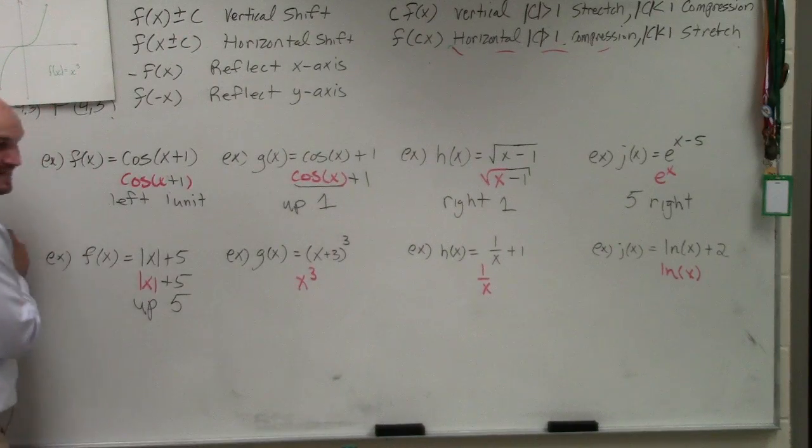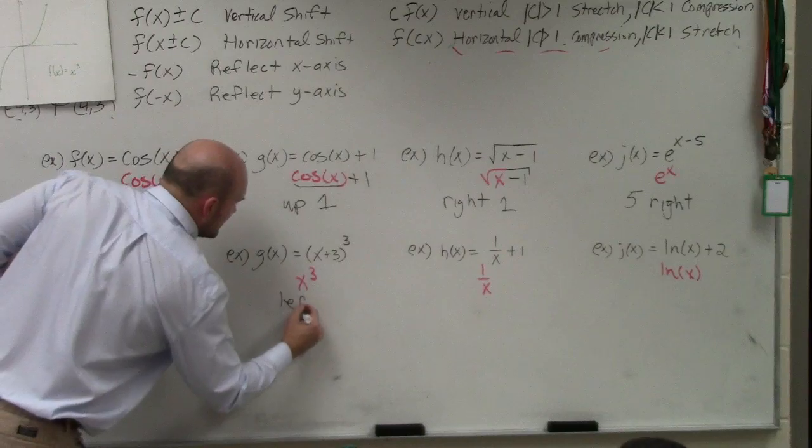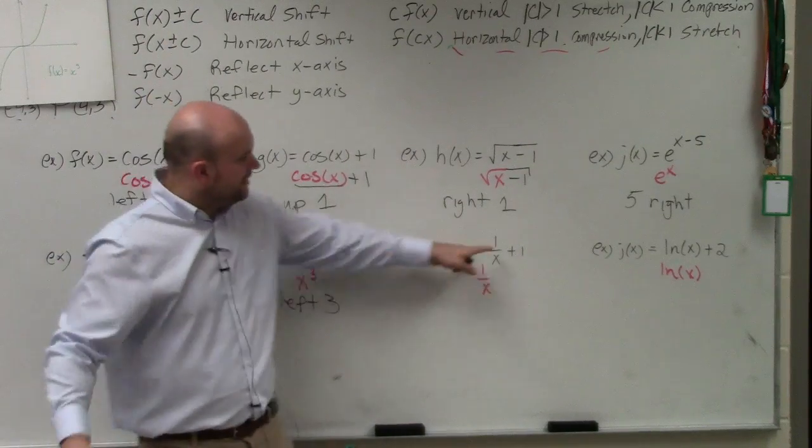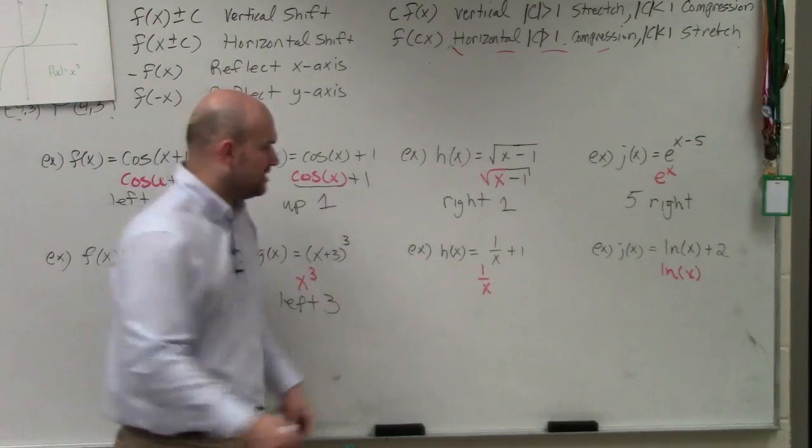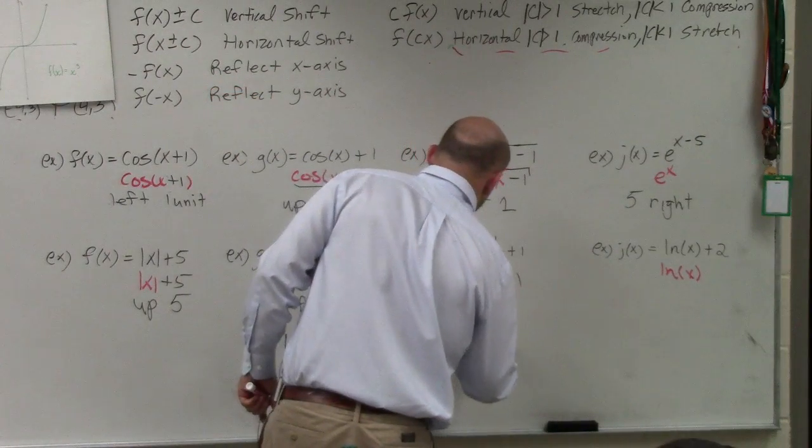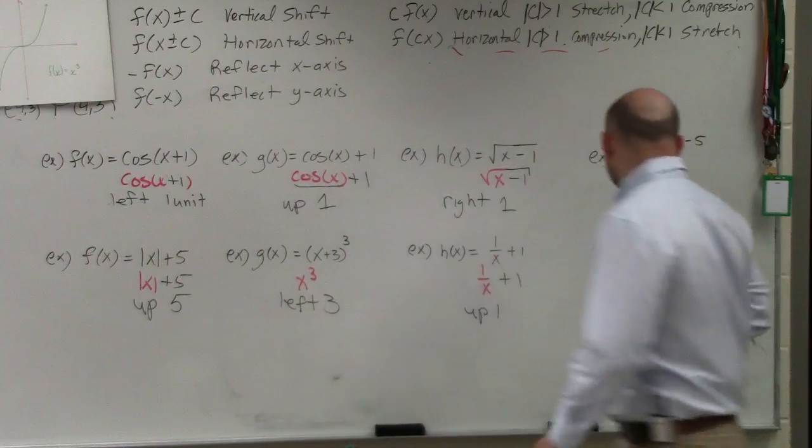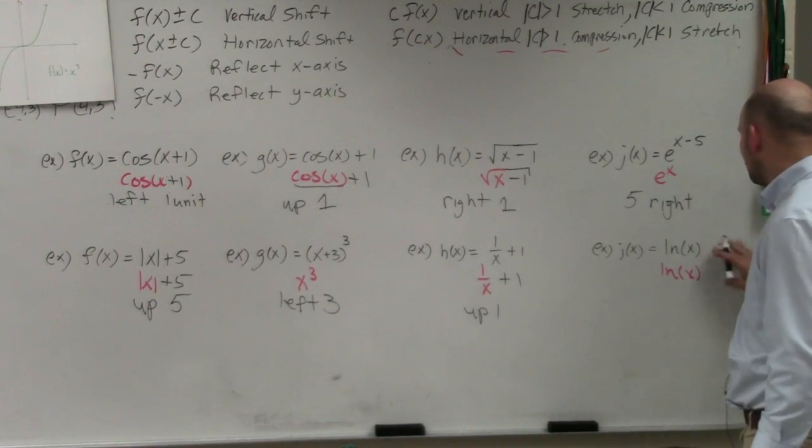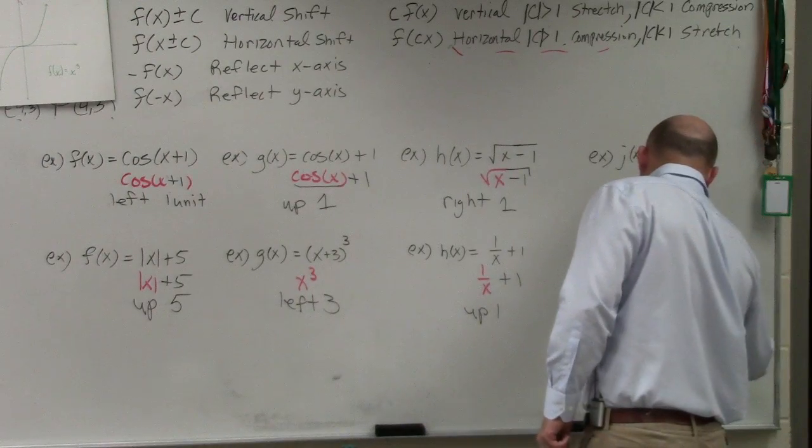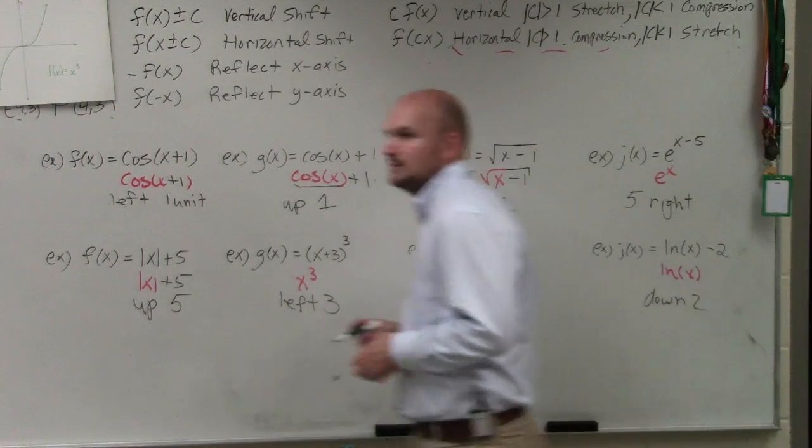Here I'm adding a three inside the function. So that's going left three. Here my function one over x, I'm adding a one outside of it. So therefore, it's going up one. And here I'm adding a function, did I not do any downs? Let's make this one go down. So therefore, we're going down two if it's negative.